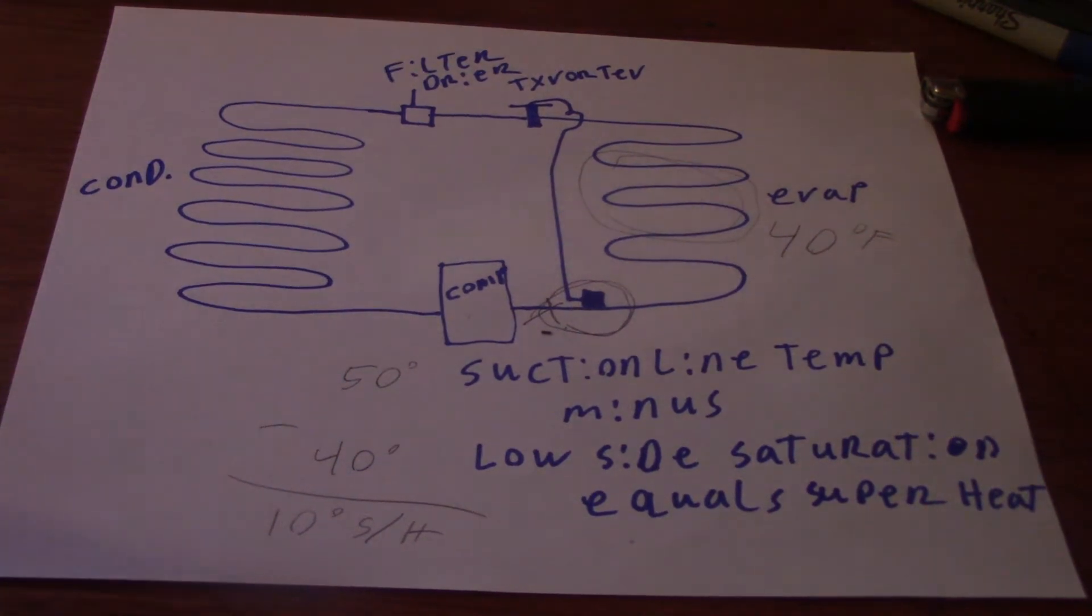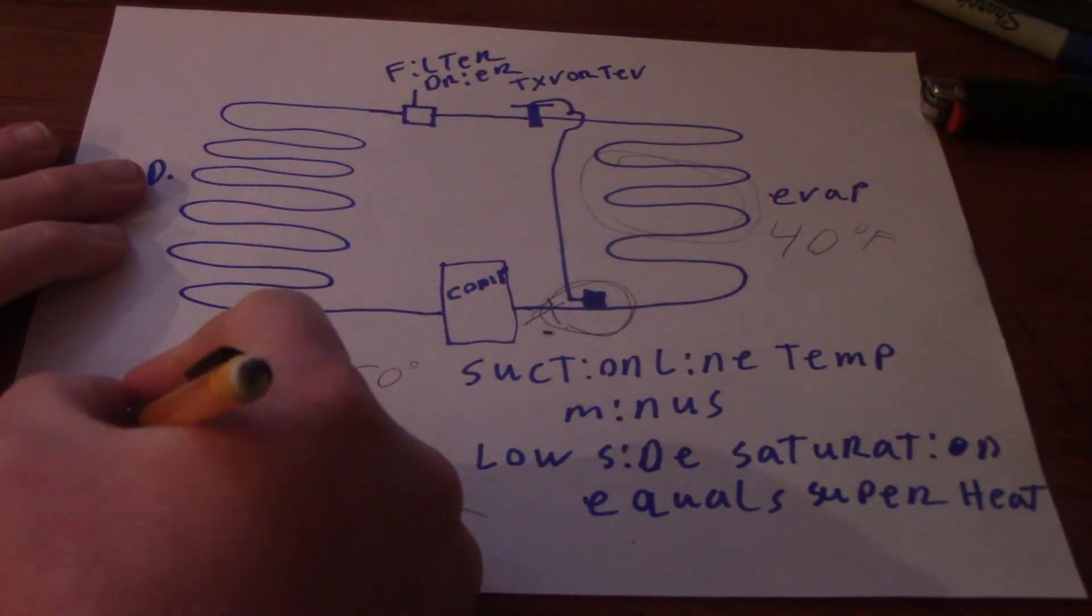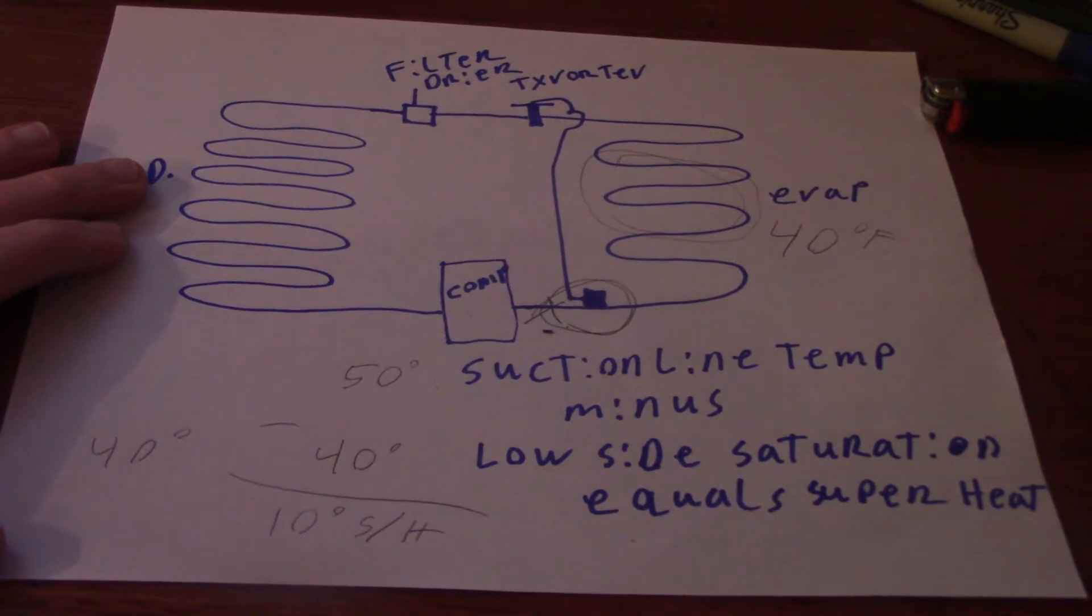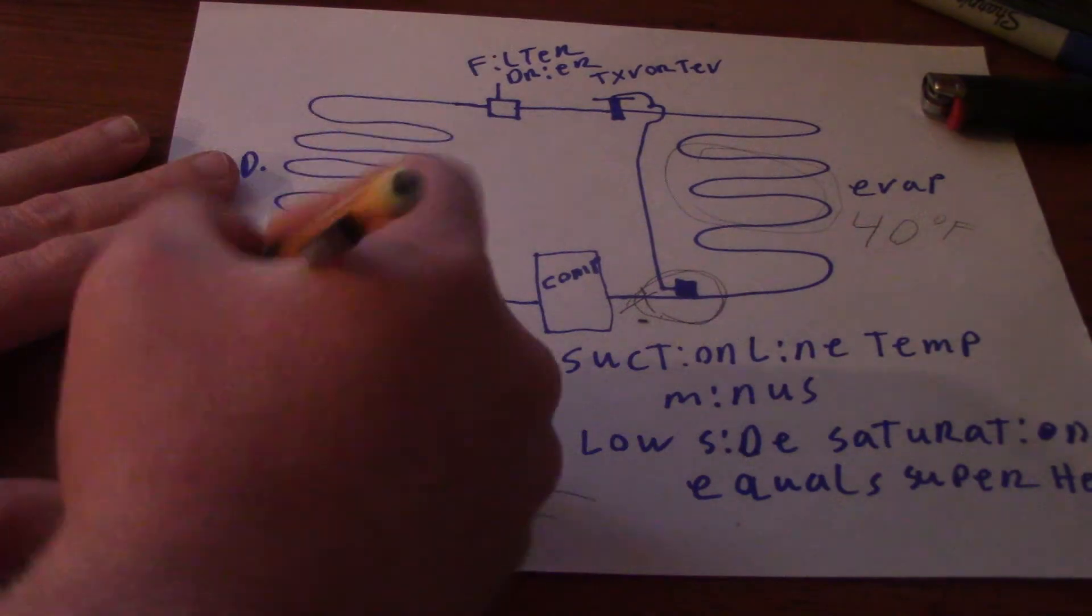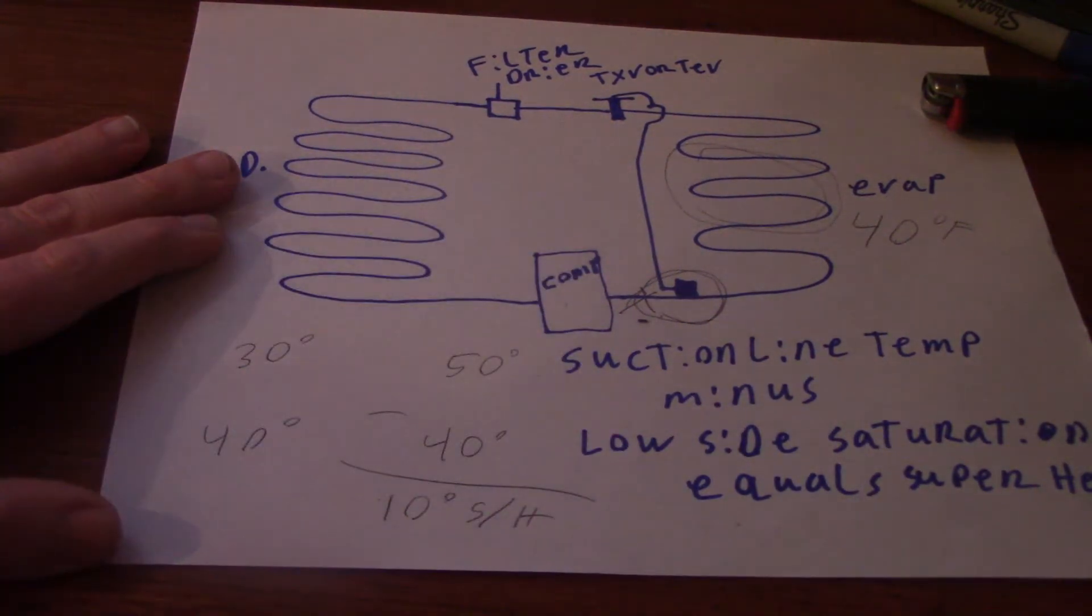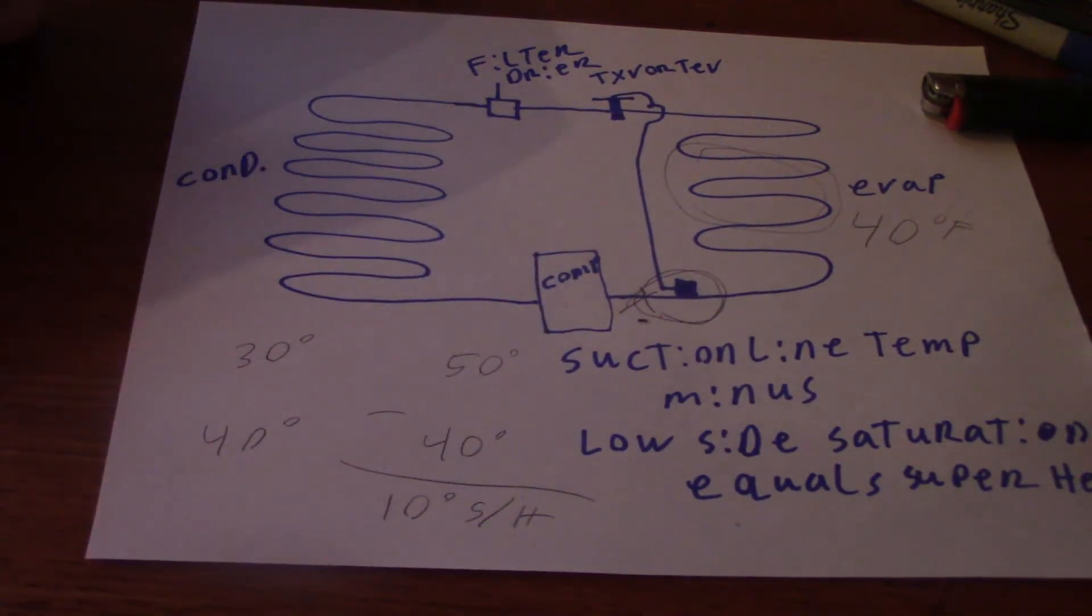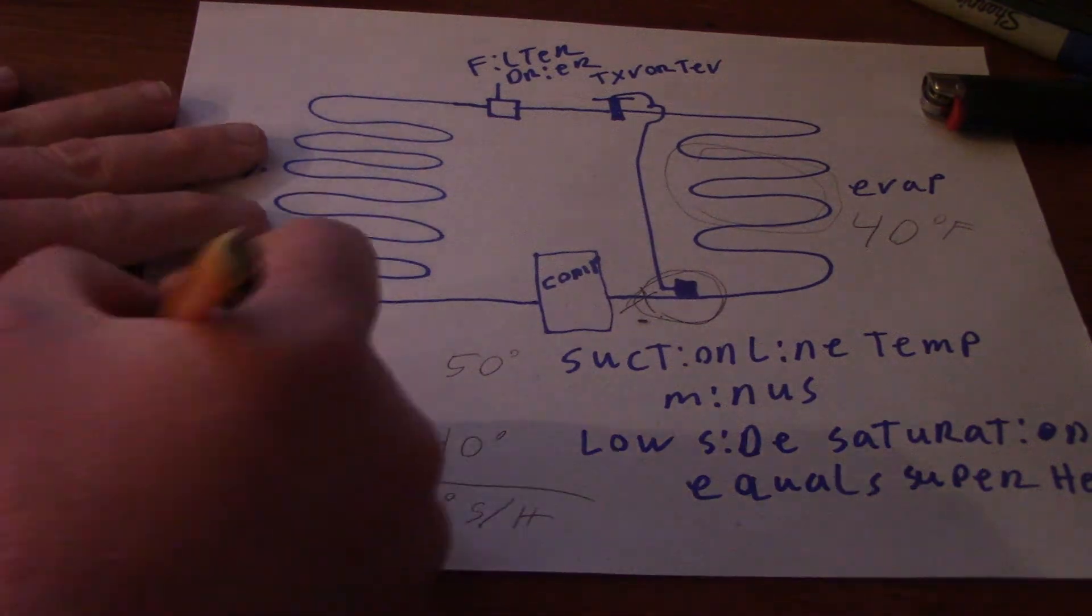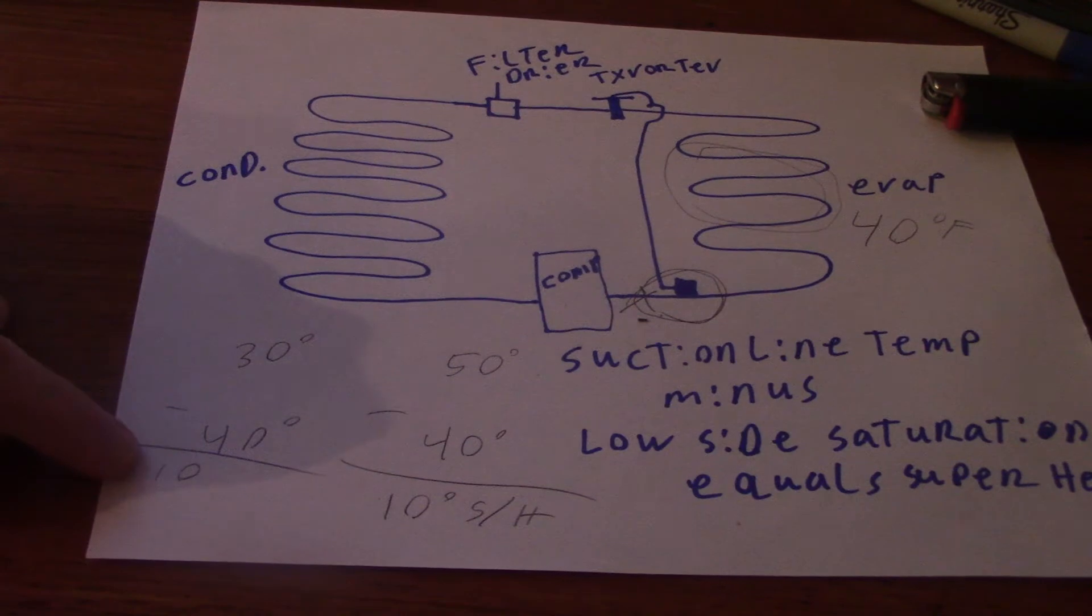If you had it backwards, let's say the system was a piston that was grossly overcharged. Where you had saturation of 40, so we're going to make a new 40 right over there, but your suction line let's say ended up being 30 degrees. If you didn't go by suction line minus low side saturation to calculate it, just did big number minus little number minus equal, you would come up with 10 by going big number minus little number and think,